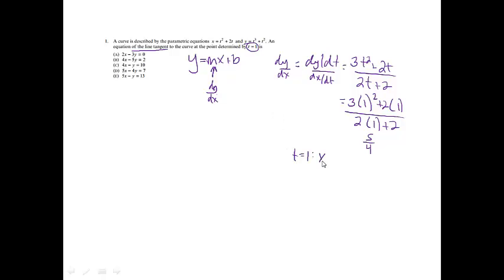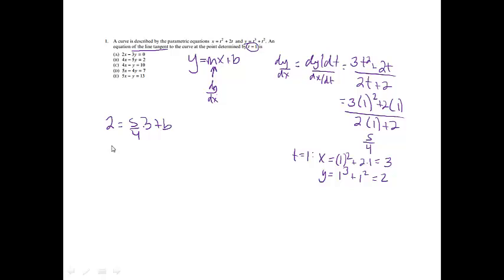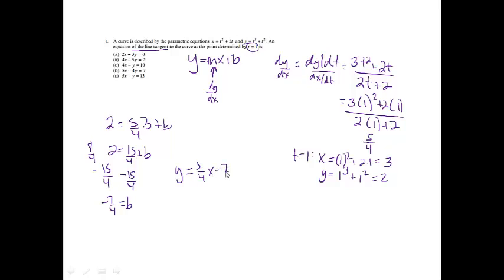When t equals 1, my x value equals 1 squared plus 2 times 1, which gives me 3. And my y value gives me 1 cubed plus 1 squared, which gives me 2. Plugging into y equals mx plus b: 2 equals 5 fourths times 3 plus b, giving 2 equals 15 fourths plus b. Subtracting 15 fourths from both sides gives b equals negative 7 fourths. So y equals 5 fourths x minus 7 fourths.